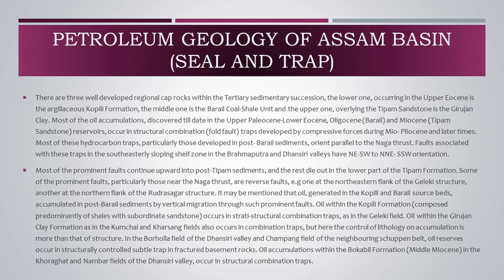Oil within the Girjan clay formation, as in the Koomchai and Kharsan fields, also occurs in combination traps, but here the control of lithology on accumulation is more than that of structure. In the Bohua field of the Dhanseeri Valley and Champang field of the neighboring Shapan belt, oil reserves occur in structurally controlled subtle traps in fractured basement rocks. Oil accumulations within the Bokabil formation (Middle Miocene) in the Khoraghat and Nambar fields of the Dhanseeri Valley occur in structural combination traps.